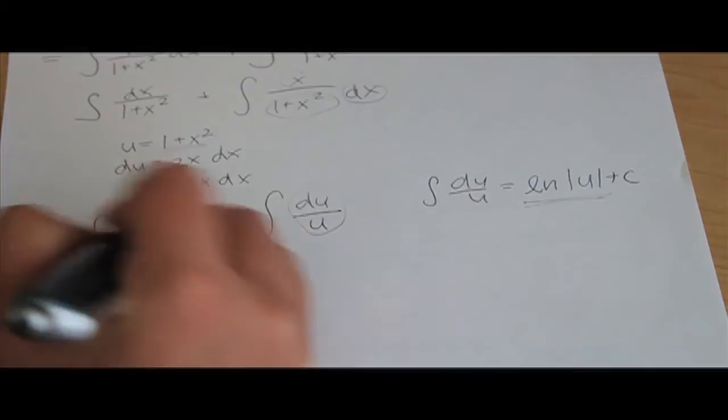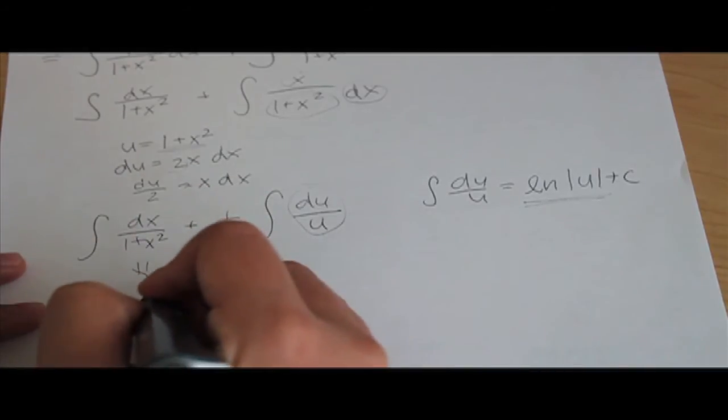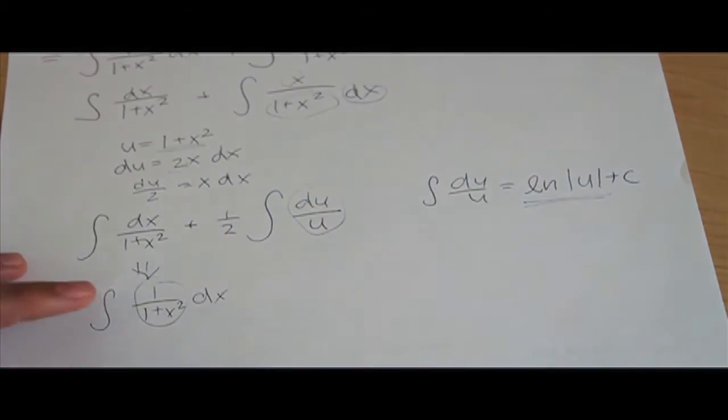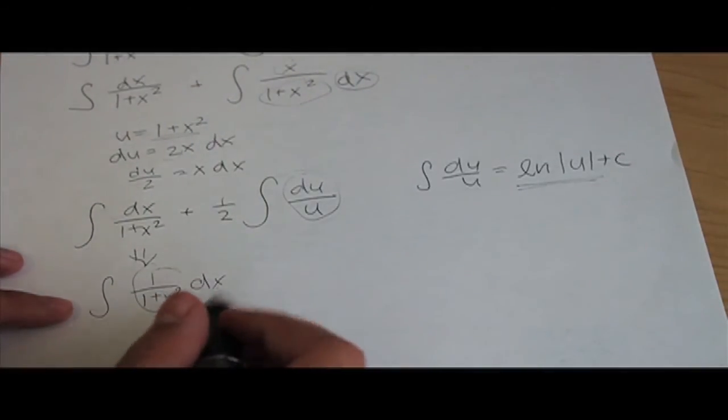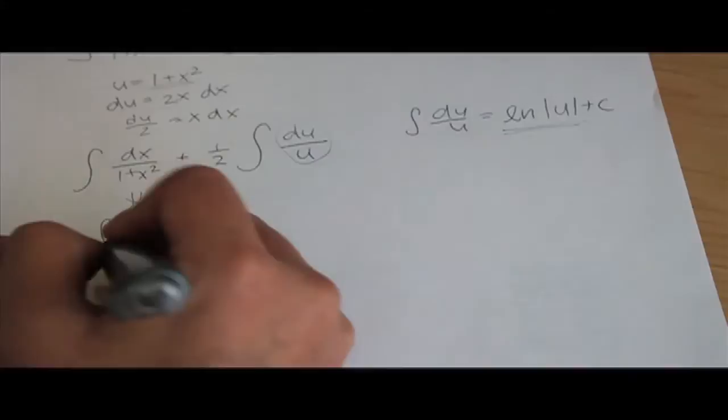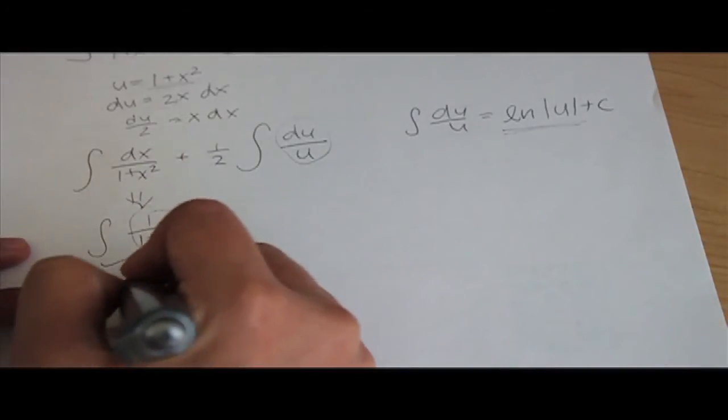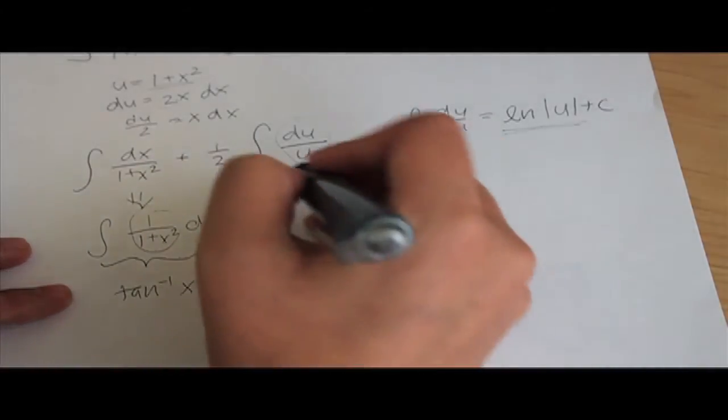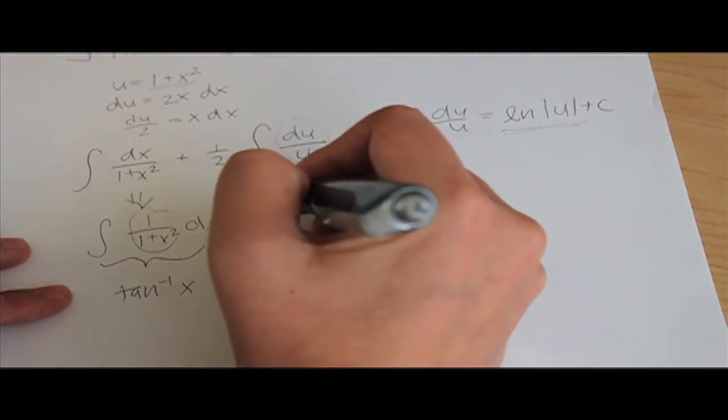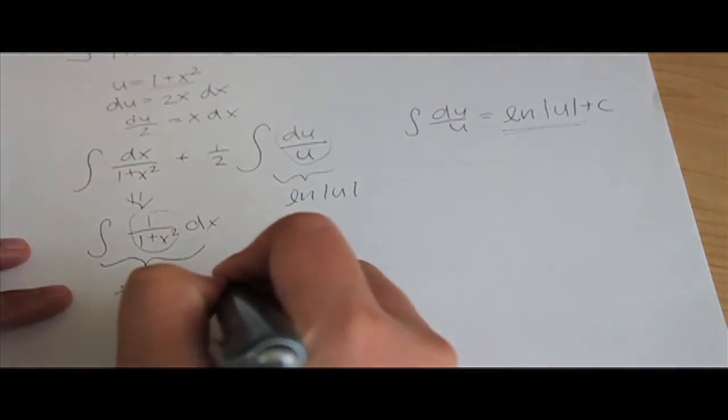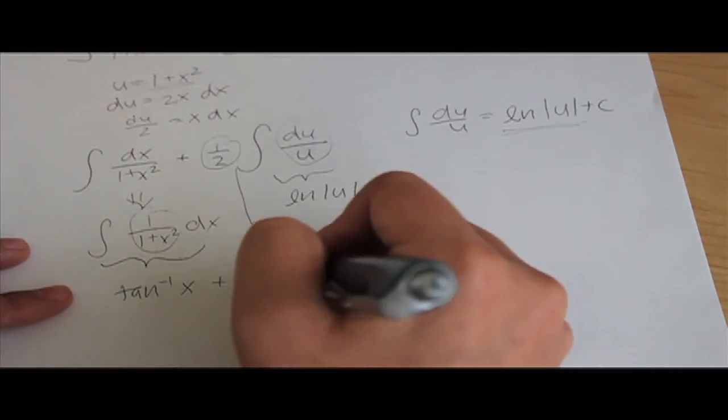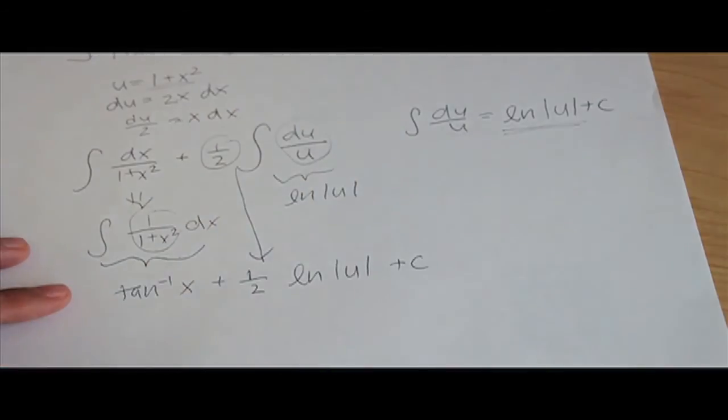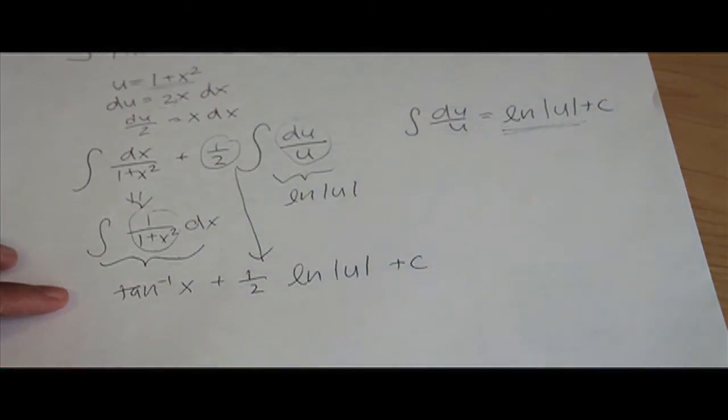If you look at this integral, if we bring out that dx and just do 1 over 1 plus x squared dx, this looks very familiar to arctangent, right? So we know that this is going to be arctangent when we get the integral of them. So this is going to be arctangent and we know that the integral of this is ln absolute value u. Don't forget to bring that one half down and then it's ln absolute value u, and don't forget your constant since this is an indefinite integral.